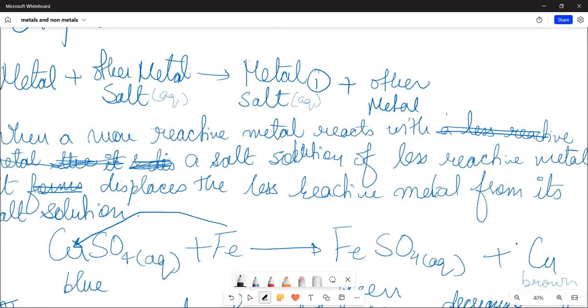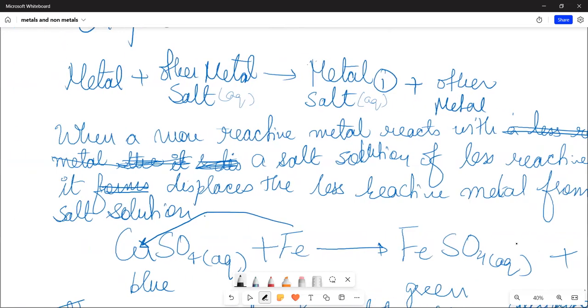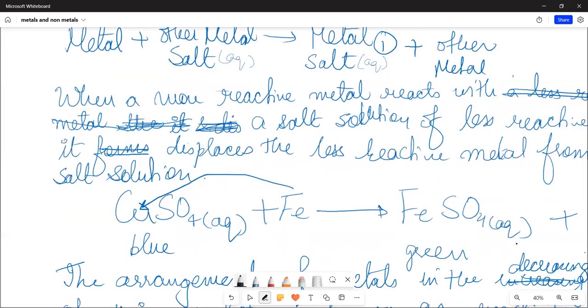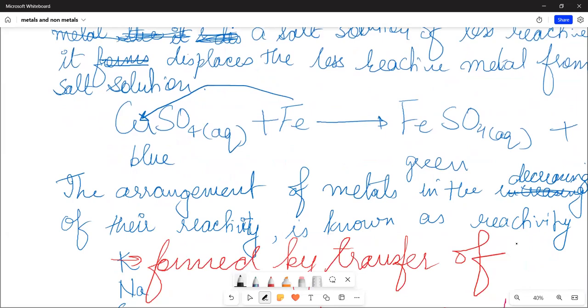Then what is reactivity series? It is the arrangement of metals in the decreasing order of their reactivity. The more reactive metals will come up in the reactivity series, and the less reactive metals will come down.